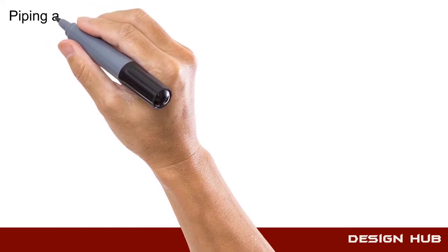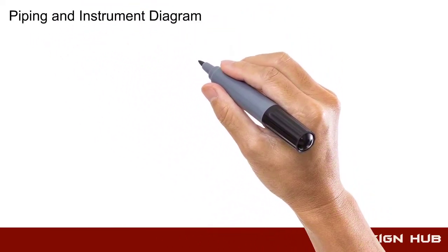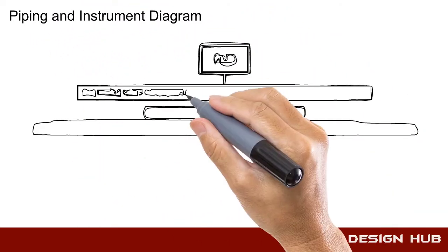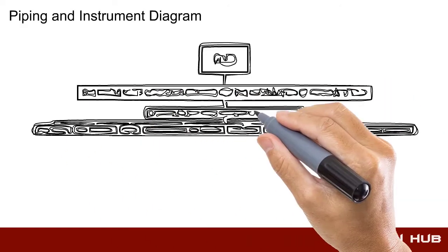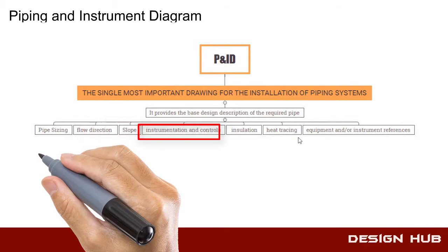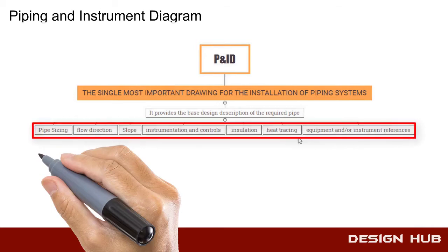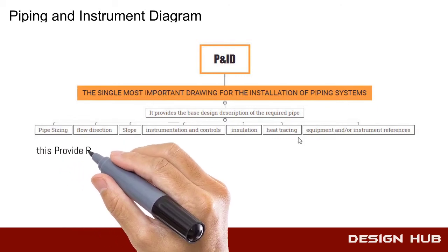First, we discuss about pipe and instrument drawing and its importance. Pipe and instrument drawing provides pipe sizing, flow direction, instrument information, and many more. This is the base for pipe designers.